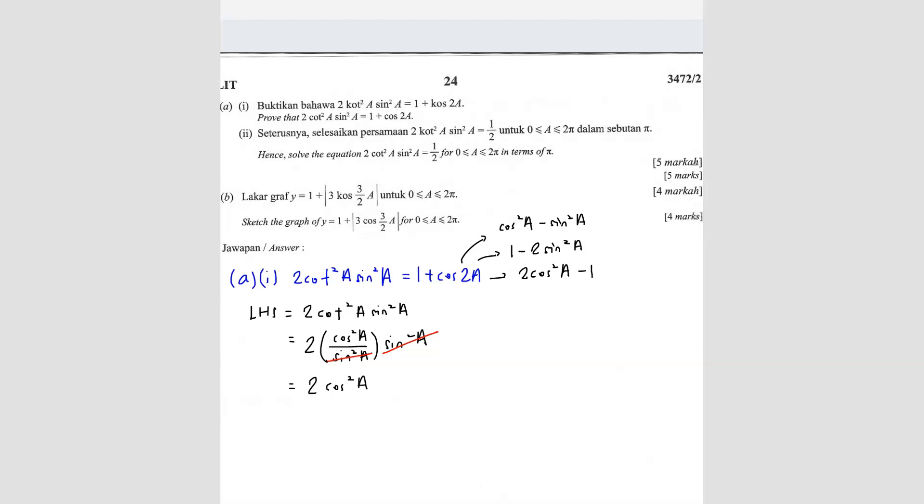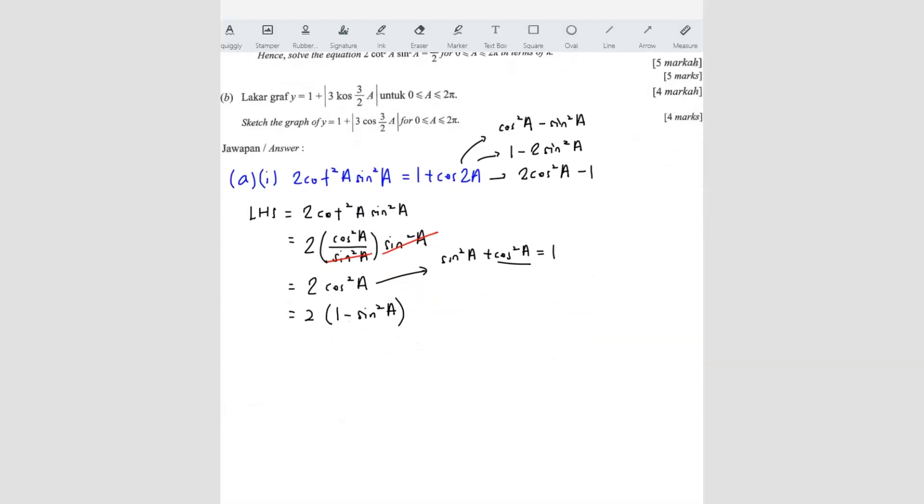So when you eliminate them, you will only have 2 cos square A. So 2 cos square A, we know the property is what? Since we know that sine square A plus cos square A equals to 1, so if you are looking for cos square A, we can write 2 times 1 minus sine square A.